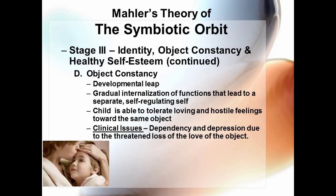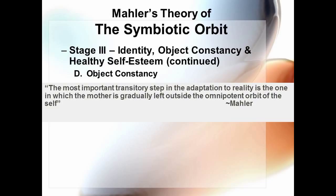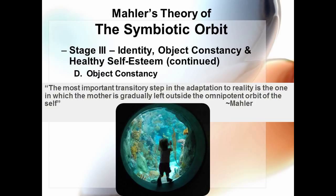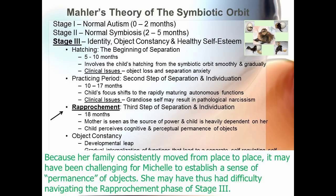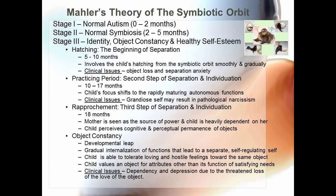According to Mahler, the most important transitory step in the adaptation to reality is the one in which the mother is gradually left outside the omnipotent orbit of the self. If we had to discuss Michelle's early functioning through the lens of the symbiotic orbit, one thought is that she may have successfully navigated each stage of development. However, because her family consistently moved from place to place, it may have been difficult for her to establish a sense of permanence of objects, and she may have had difficulty navigating the rapprochement phase of stage three. Through deep exploration of childhood dynamics and early caregiver experiences, a lot of vital information can be obtained about this era of the client's life.